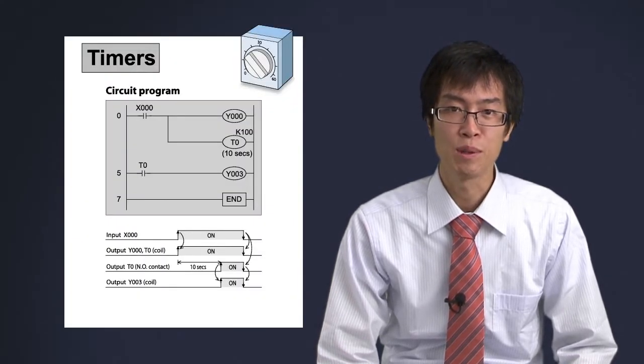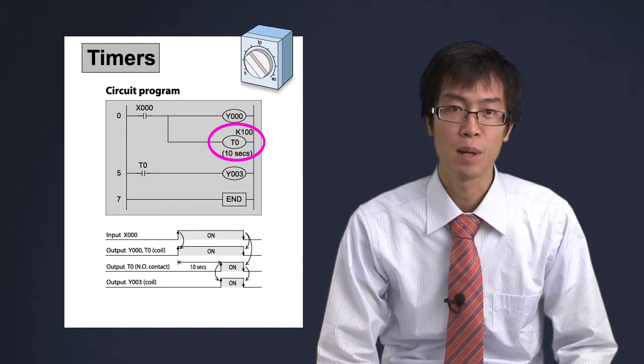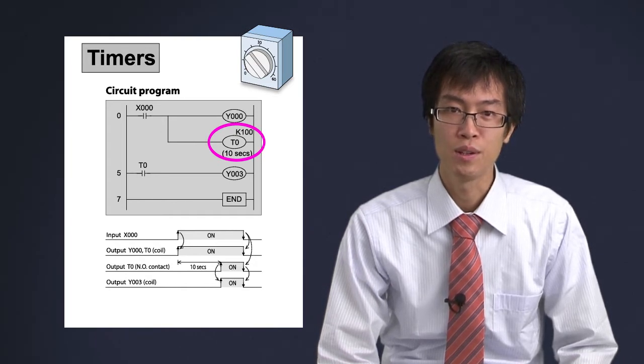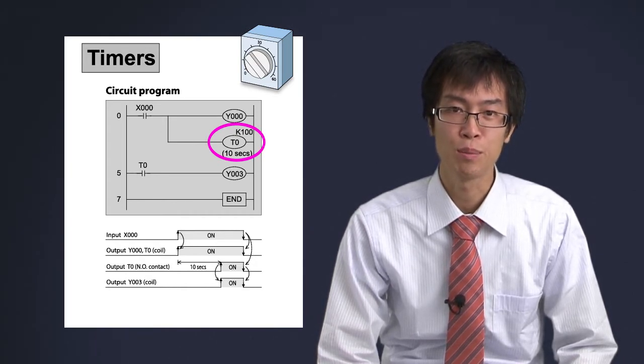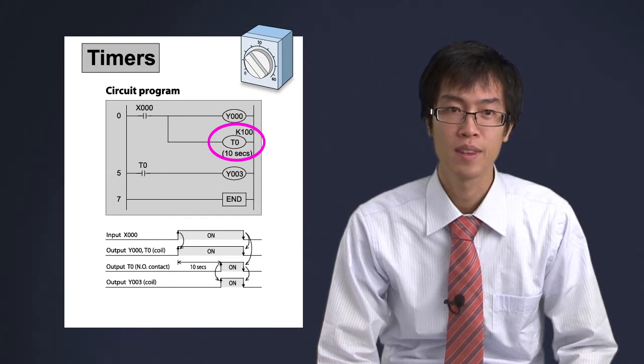The timer in the PLC is represented as T. The timer contact does not close until its coil has been energized for a preset period of time.